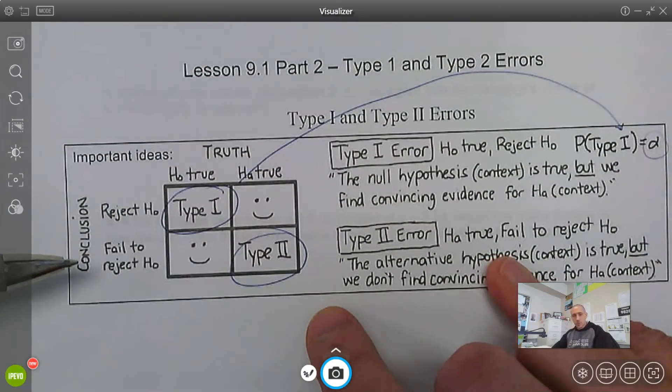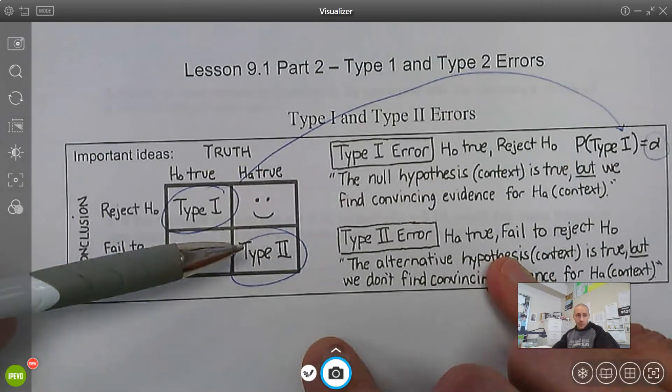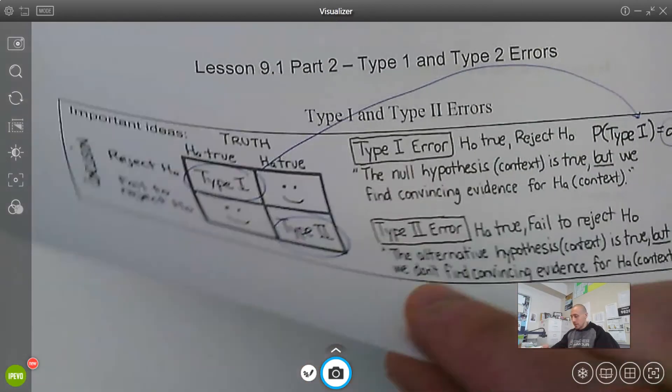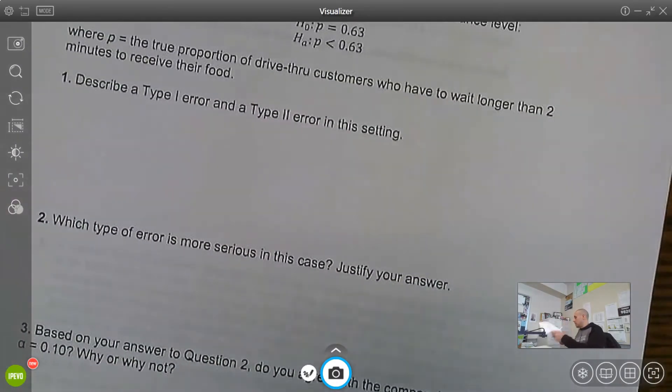And then if the alternative is true and we fail to reject the null, that is a Type 2 error. So we're going to delve into these two errors a little bit more on this next page.